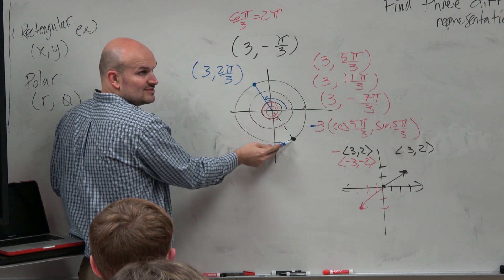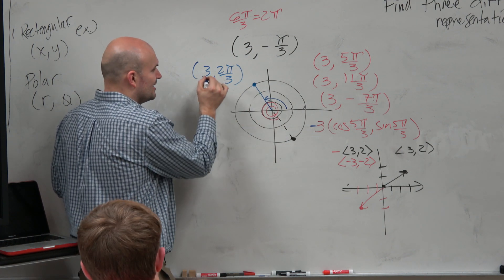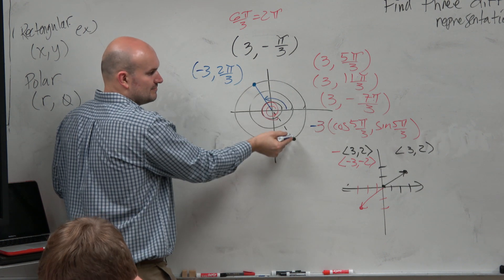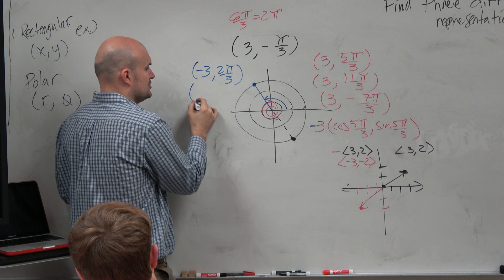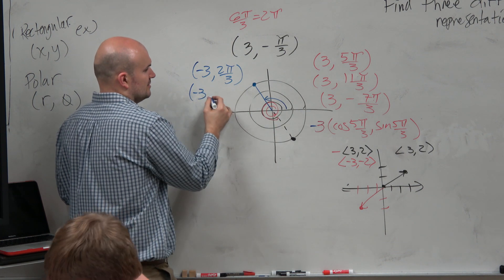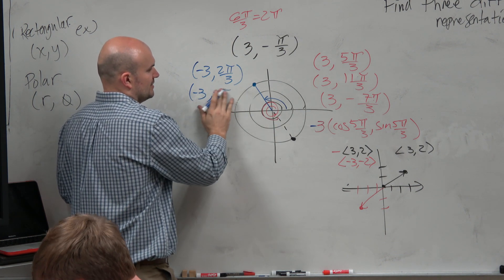But I want it to get to here. So then what do I got to make the radius? Negative. Now it's that point. All right? Or you could also do the negative version, which would be negative, what, 4 pi over 3.